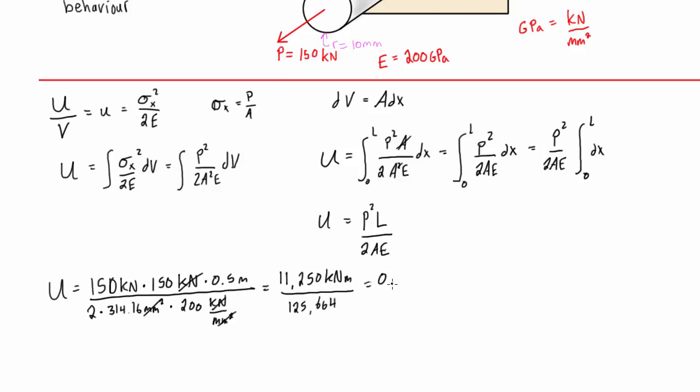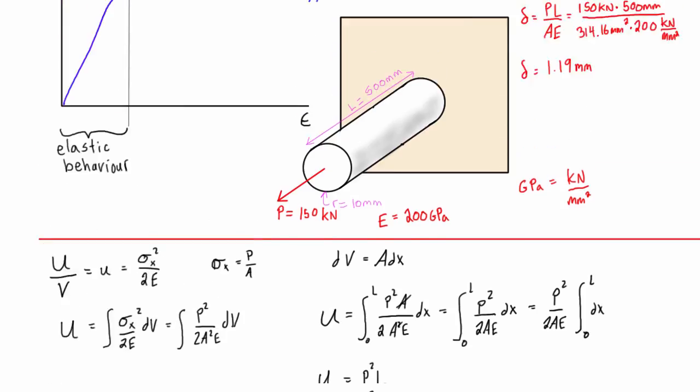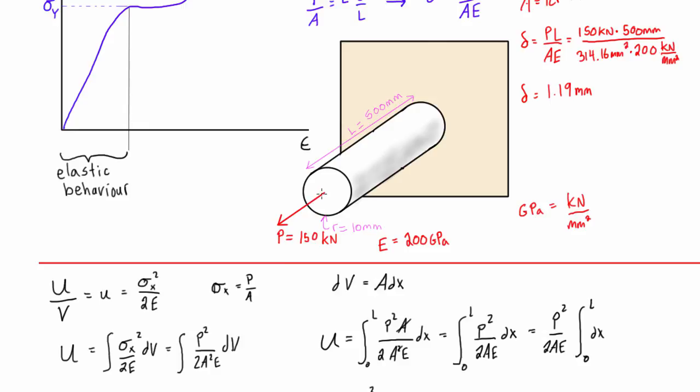We're left with 0.0895 kilonewtons meters, and that's an ugly number, so we're going to convert that into newton meters, that is just 89.5 newton meters, and newton meters is joules, so we have 89.5 joules, that is our elastic strain energy that we've built up in this rod when we applied that load to it. So boom, there's our answer.